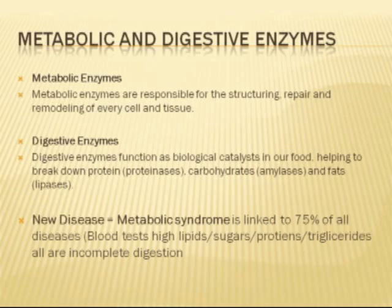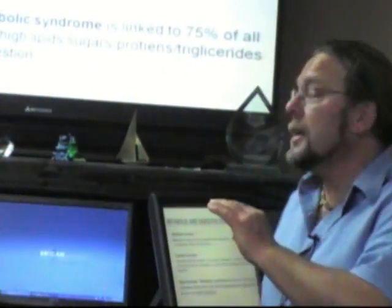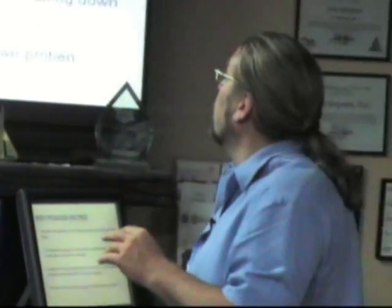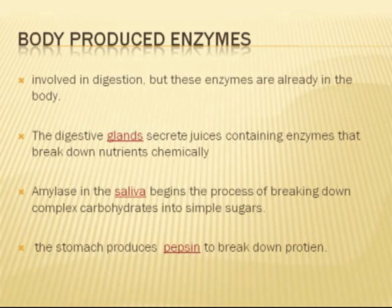What we're going to learn is that blood tests showing high lipids, high sugar, and high protein doesn't mean that you just have high blood — it means you've got toxic levels of these in your bloodstream. Now, your body produces certain glands and certain enzymes, and these break down or alkalinize food.